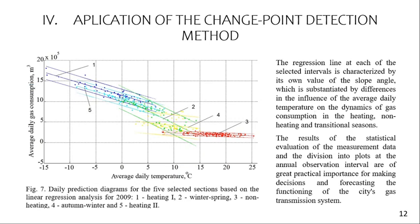We obtain the regression line at each of the selected intervals. Each is characterized by its own value of the slope angle, which captures differences in the influence of the average daily temperature on the dynamics of gas consumption in the heating, non-heating, and transitional seasons.